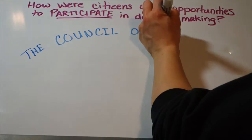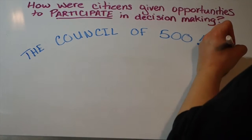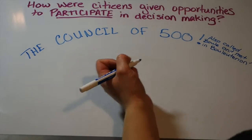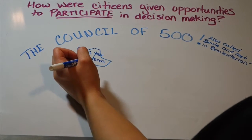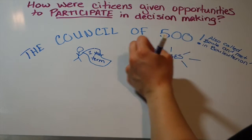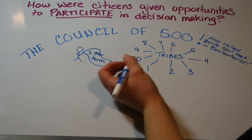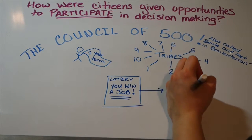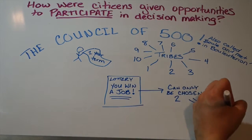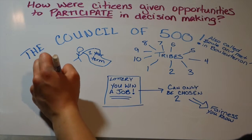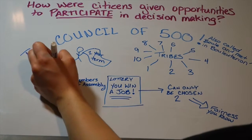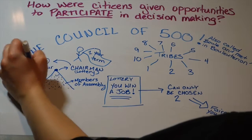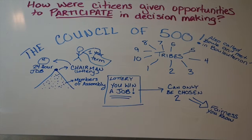Now the Council of 500: every member served a one-year term, and all of the people were split into 10 tribes, with jobs given through a lottery system. So you won your one-year job, and you could only be chosen twice, to be more fair so more people get a shot. All those dots represent assembly members, and at the very top you have the chairman, who is also given his job through a lottery and holds that job for a whopping 24 hours. That's it.